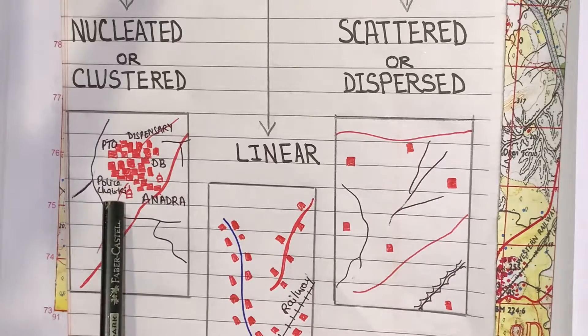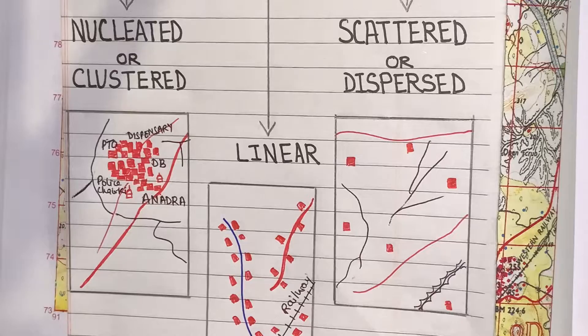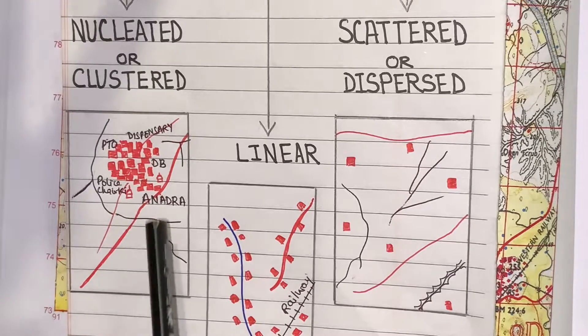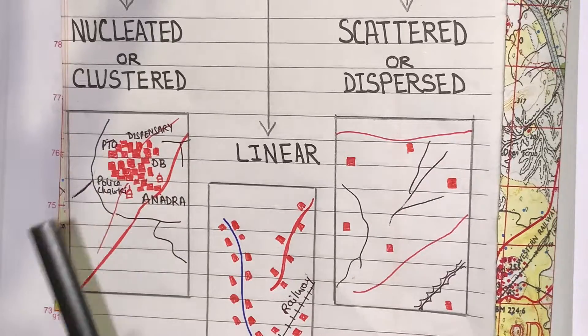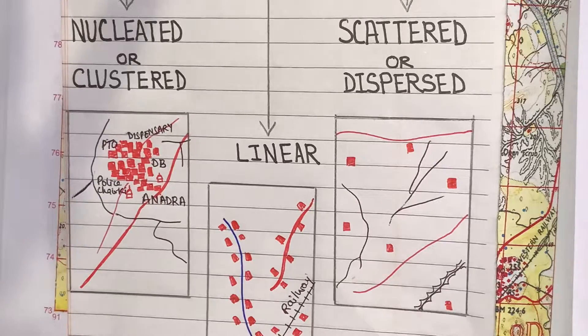This type of settlement develops in the fertile area where the people can do agriculture, and there are many offices where people can do their work. This is the example of economically well-developed settlement.